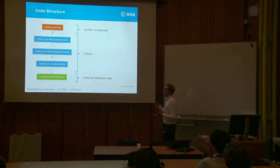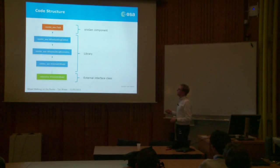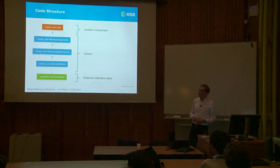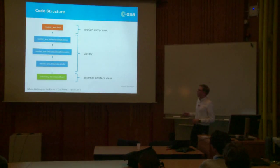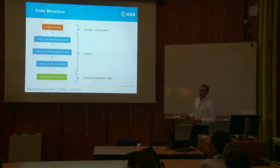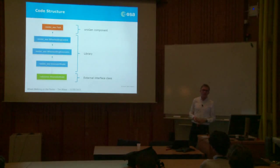We then implemented this in a Rock module. The basic structure of a Rock module has an Orogen component at the top which hooks into the network of Rock components. This is the only part of the whole stack that is framework-dependent — everything below is framework-independent, so you can just code away. The Orogen component takes your library, calls the specific functions, and integrates it into your network of Rock components.